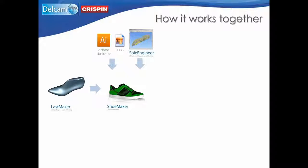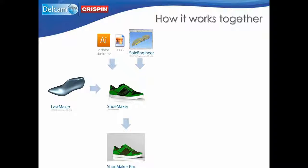If you also design soles, you can easily import your sole design directly from Delcam Crispin's Sole Engineer. You can design and grade the upper and the sole in the same 3D environment so you achieve accuracy quickly. You can also export to a 3D printer for rapid prototyping, which helps reduce the time and the cost of product development. Once you've produced your style lines in Shoemaker, you can easily add more detail by colouring the panels of your shoe with your own scanned-in textures.